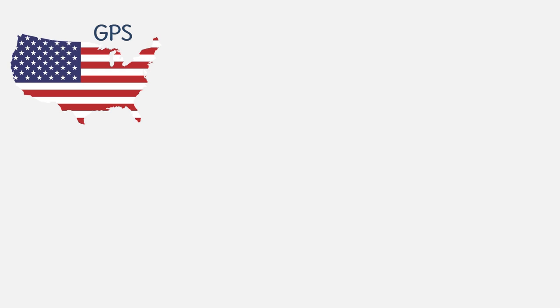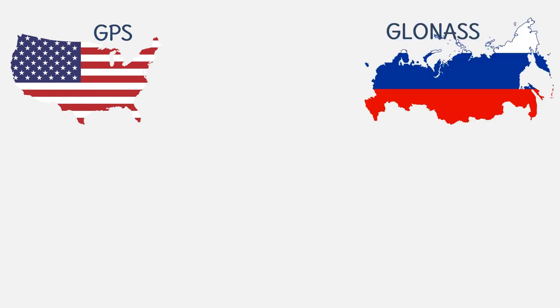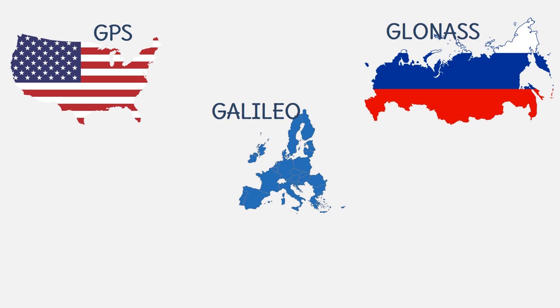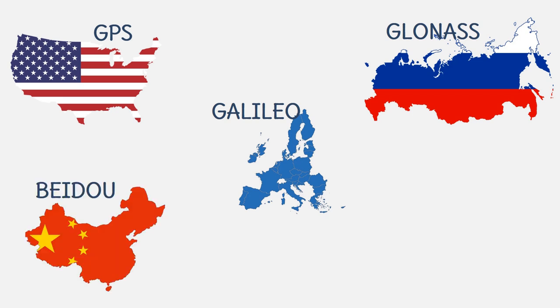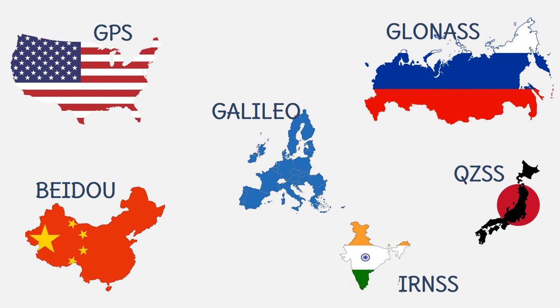Then came the Russian system GLONASS, the EU system Galileo, the Chinese system BeiDou, the Japanese and the Indian systems. The Japanese and the Indian systems have regional coverage while the others have global coverage.